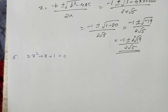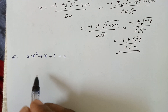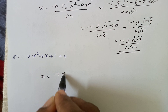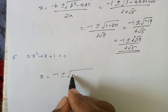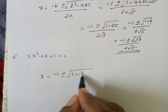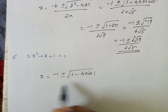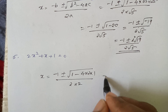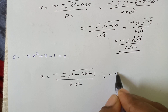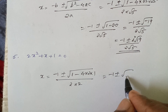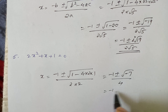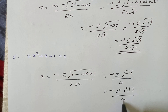For 2x squared plus x plus 1, using the quadratic formula: x equals minus 1 plus or minus root of b squared minus 4 into 2 into 1, divided by 2 into 2. This gives 1 minus 8, resulting in minus i root 7 divided by 4.